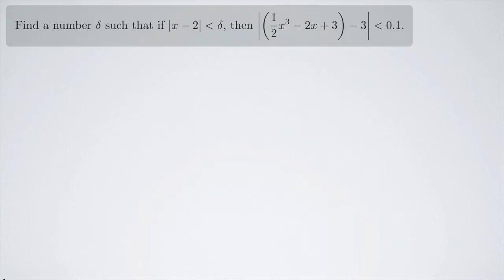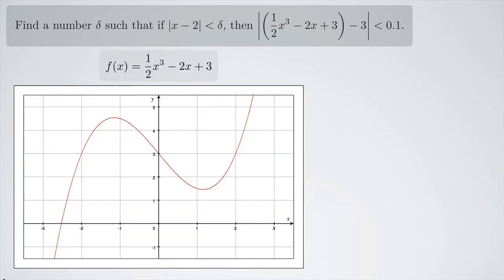So let's look at this in a little more detail. Here is what we were asked to do in the problem, and here is the function that we graphed earlier. So if we look at the problem statement, we see that we want to find a number delta such that the distance between x and 2 is less than delta. So we're looking on the x-axis at 2 right here, and we want that distance between any number x and 2 to be less than some number.